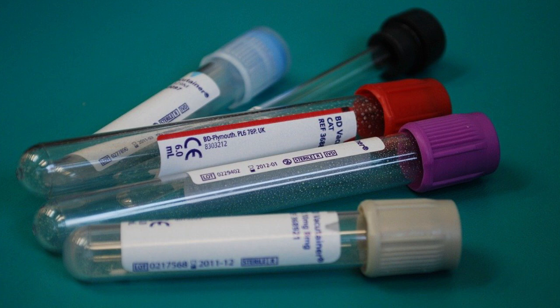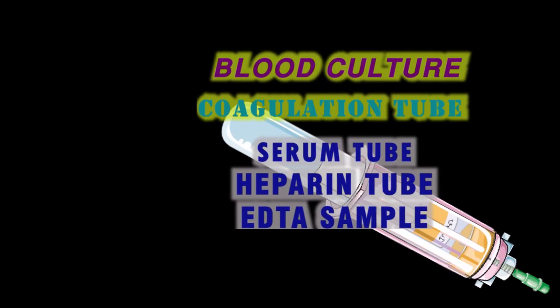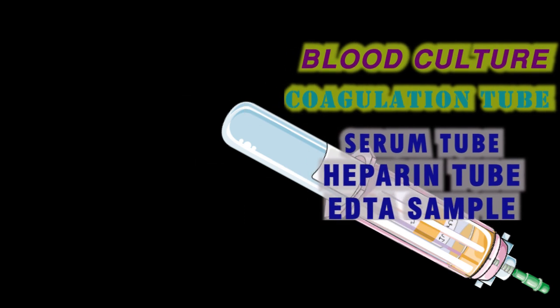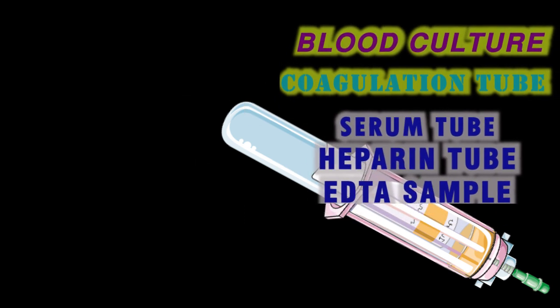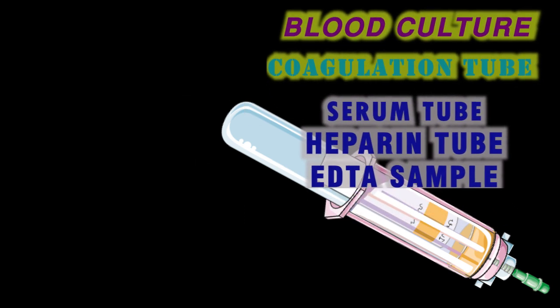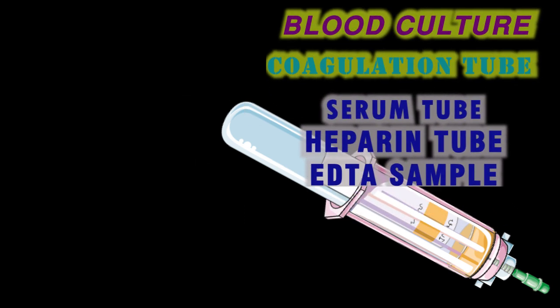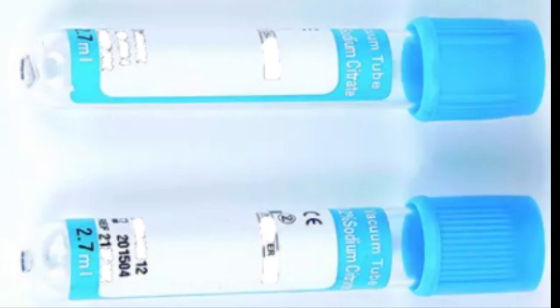Order of draw: improper order of blood collection tube draw can result in incorrect test results. The order should be: blood culture tube, then coagulation tubes, then serum tubes with or without activators or gel, then heparin tube, then EDTA tube.